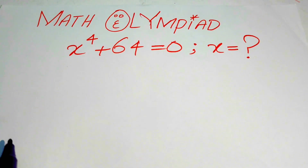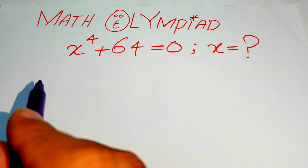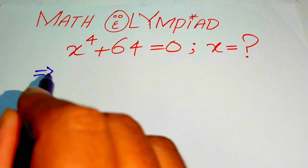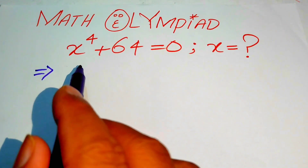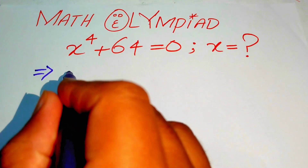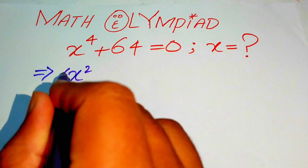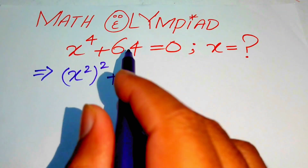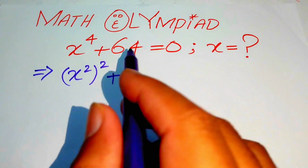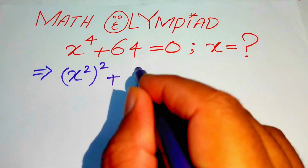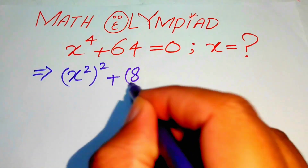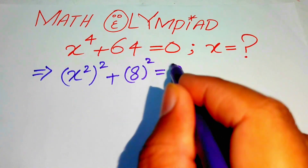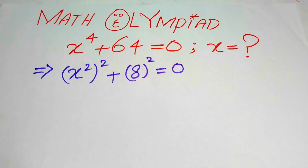The very first step is to rewrite this equation. Because we have x to the power of 4, we rewrite it as x squared whole squared, plus we write 64 as 8 squared whole squared, equal to 0.